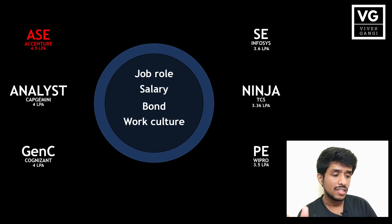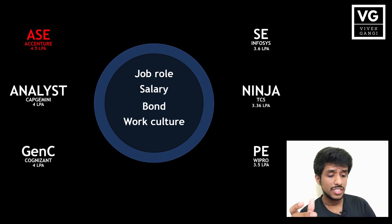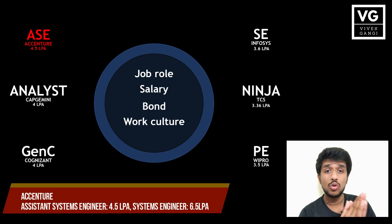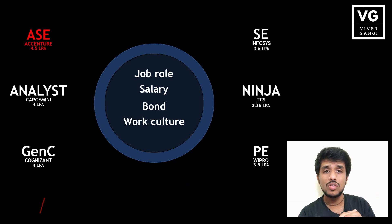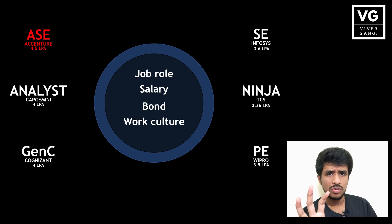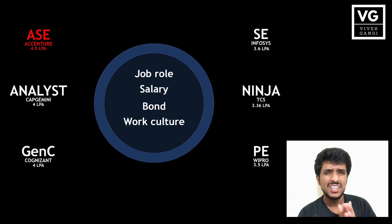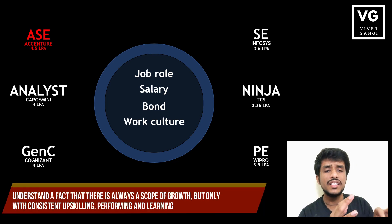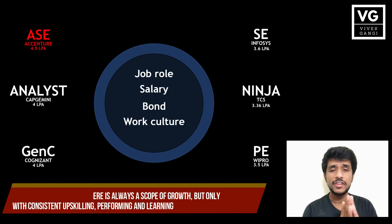Now for the individual analysis of each company. First is Accenture, where the entry-level role is Assistant System Engineer at 4.5 LPA. Accenture also hires for Systems Engineer at 6.5 LPA — those people are more likely to get developer roles. At the 4.5 LPA level, you are most likely going to get a tester role. Being in testing doesn't mean no future scope in development, but you have fewer things to learn initially since you are using ready-made tools for debugging and operation.